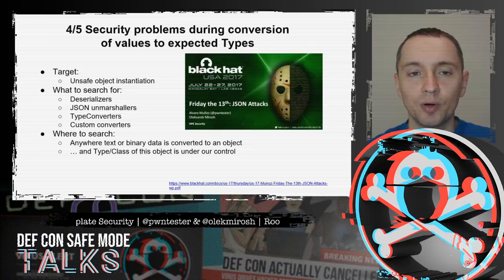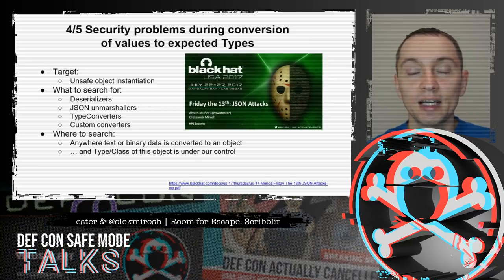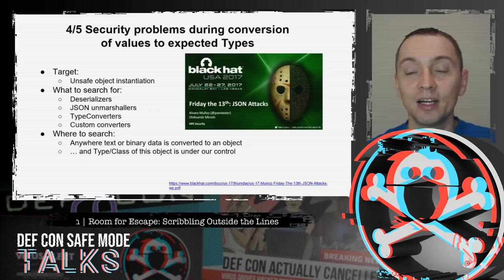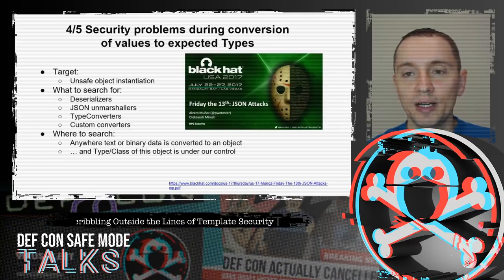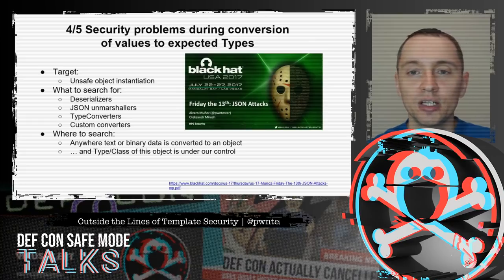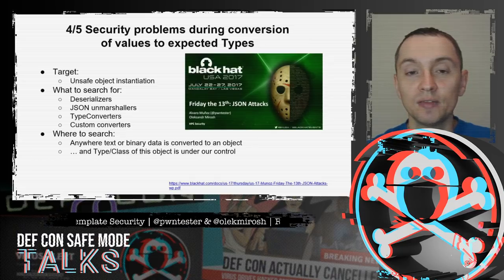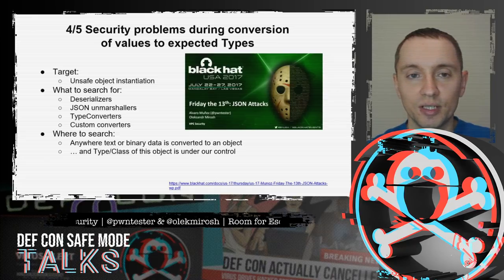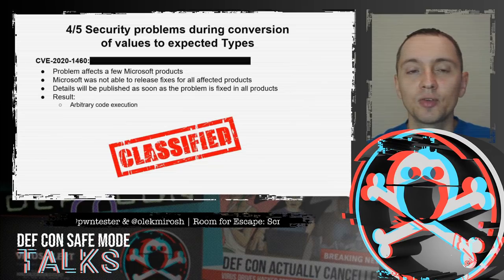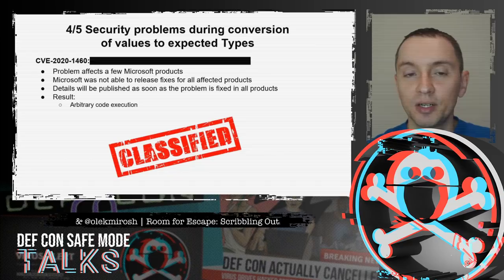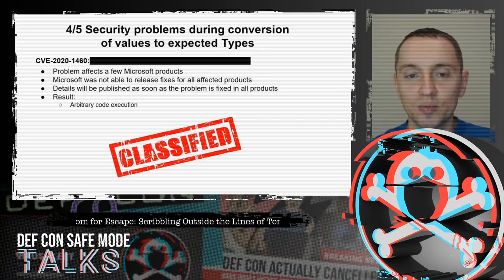The next type is unsafe deserialization, connected to our previous work. This problem is relevant when text or binary data is converted to an object and the type or class is under attacker control and not properly limited. It doesn't matter what mechanism is used — classical deserializers, JSON unmarshallers, type converters, or custom approaches — all are potentially dangerous and may require finding a proper gadget. We found examples in SharePoint allowing arbitrary code execution, but a patch is not yet available, so we will publish details when the fix is released.